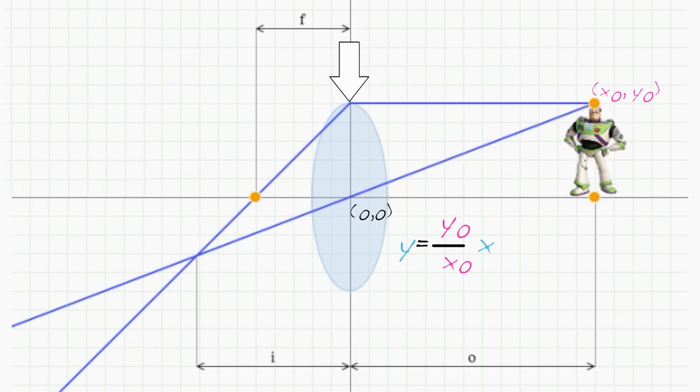The parallel ray passes through two points we know, the point on the lens it hits, which is at 0, y0, and the focal point of the lens, which is at minus f0. It has a slope y0 over f and a y-intercept at y0. So the equation of this line is y equals y0 over f times x plus y0.